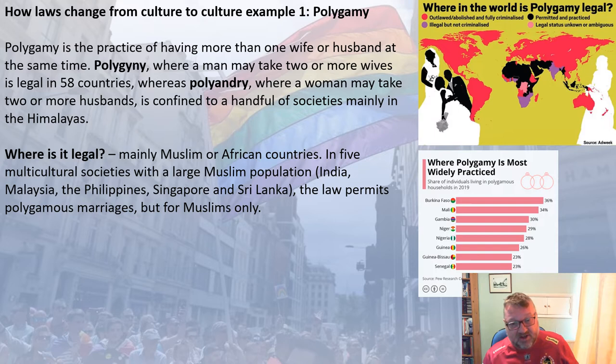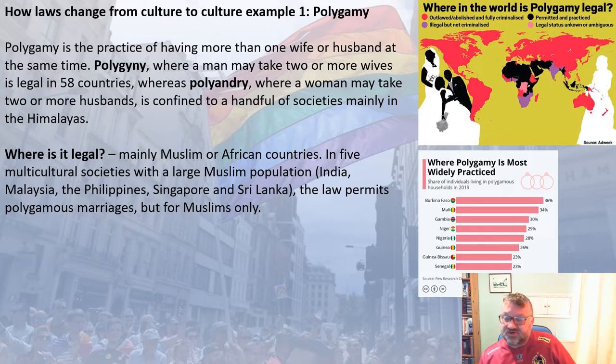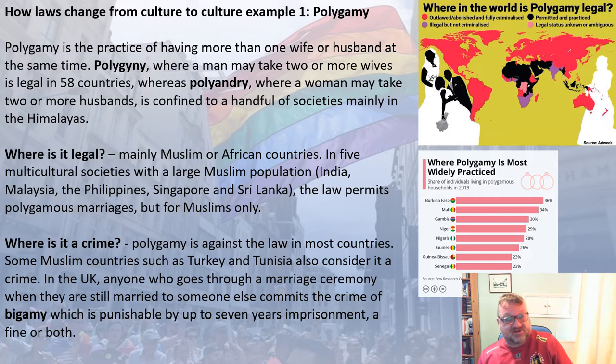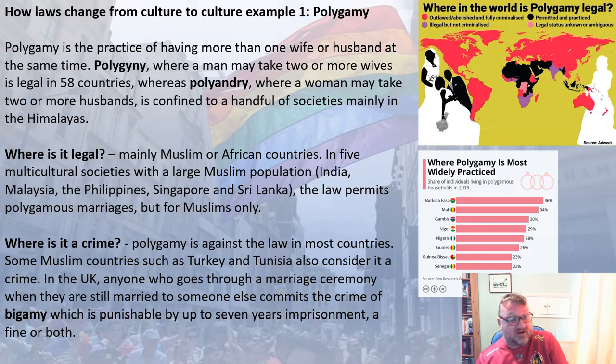Polygamy is mainly legal in Muslim or African countries, and in five multicultural societies with large Muslim populations — India, Malaysia, the Philippines, Singapore, and Sri Lanka — the law allows polygamy but only for Muslims. However, it's a crime in most countries. Some Muslim countries such as Turkey and Tunisia view it as a crime. In the UK, anyone who goes through a marriage ceremony while still married to someone else commits the crime of bigamy, punishable by up to seven years' imprisonment, a fine, or both.